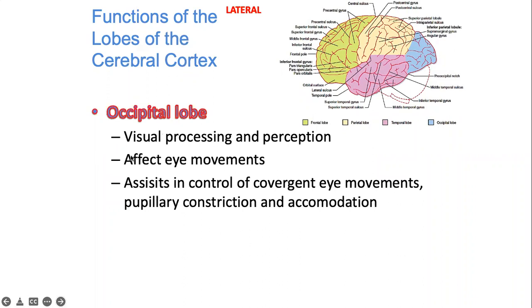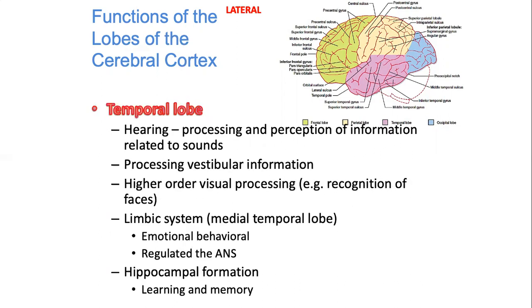The occipital lobe is involved in visual processing and perception. It processes the things perceived by your eye, affects eye movement, and assists in control of convergent eye movements, pupillary constriction, and accommodation. Everything about the eye is connected to your occipital lobe.